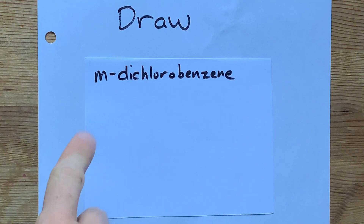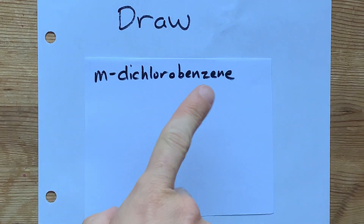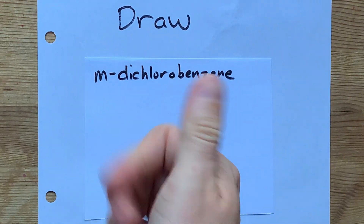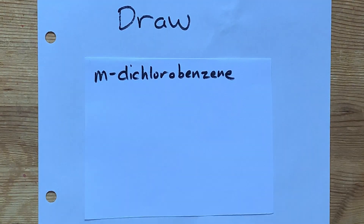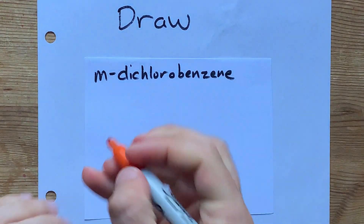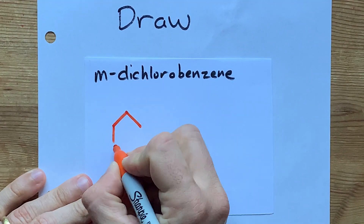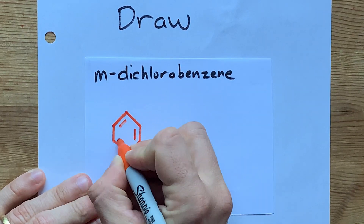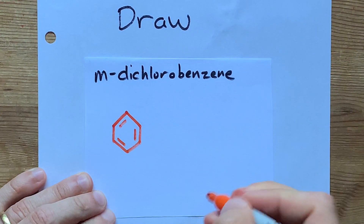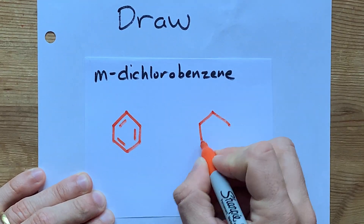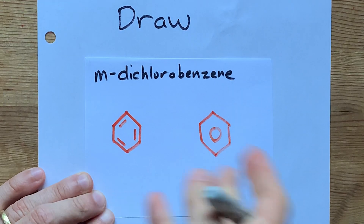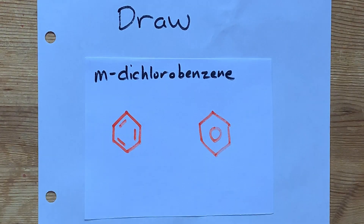If you've been asked to draw M-dichlorobenzene, you are in the minority because ortho and para, for some reason, are way more popular. But anyways, let's draw a benzene. That's a hexagon of carbons with alternating double and single bonds. Or, you can also draw a hexagon with a single circle in it. Every chemist knows both of these represent benzene.